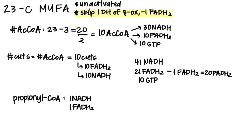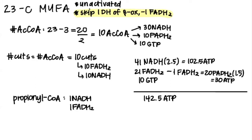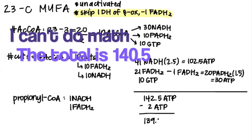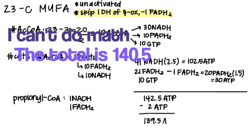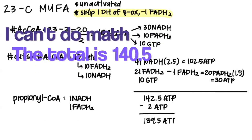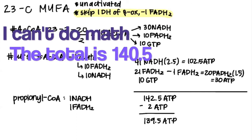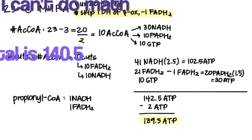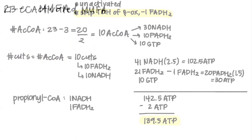We multiply and add everything up to get 142.5 ATP, but we subtract 2 ATP because it is unactivated. So we get 139.5 ATP yielded from a 23-carbon monounsaturated fatty acid.